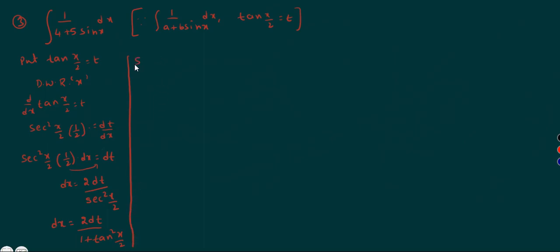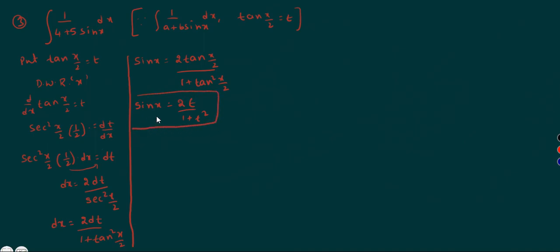Now for the sub-multiple formula: sin x equals 2·tan(x/2) by (1 plus tan square(x/2)). Substituting t for tan(x/2), sin x equals 2t by (1 plus t square).